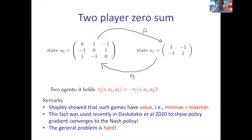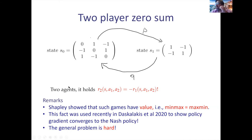This min-max equals max-min property was used recently in a paper by Daskalakis et al. at NeurIPS 2020 to argue that an algorithm called policy gradient converges to a Nash policy. In general, finding Nash policies for arbitrary stochastic games with more than two agents and no further assumptions is a very, very hard problem. The question is: can we find an interesting class of stochastic games where we can provably get Nash policies?